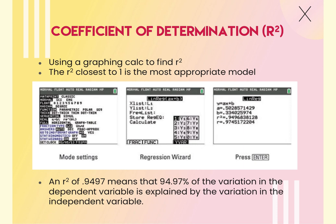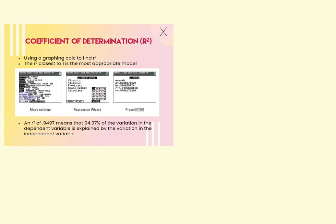Now we'll talk about the coefficient of determination. R-squared tells you which model is the best fit. The closer R-squared is to 1, the more appropriate the model. If R-squared equals 1, it's a perfect model. An R-squared of 0.9999 is very good; an R-squared of 0.5 is not appropriate. If given three models and 0.5 is the highest, it's the best of those three, but it's still not a good model.